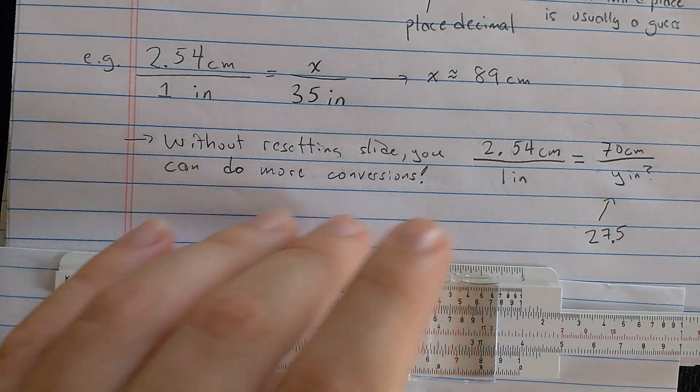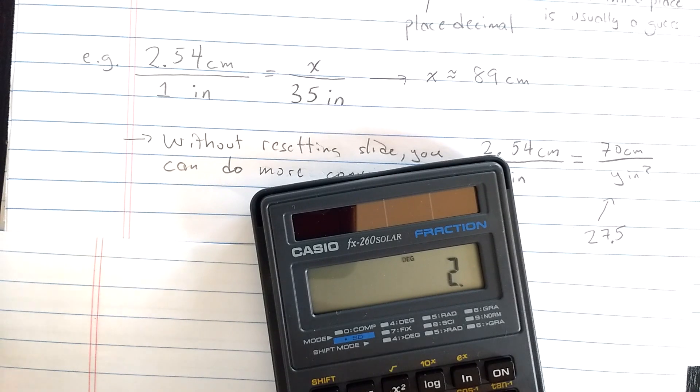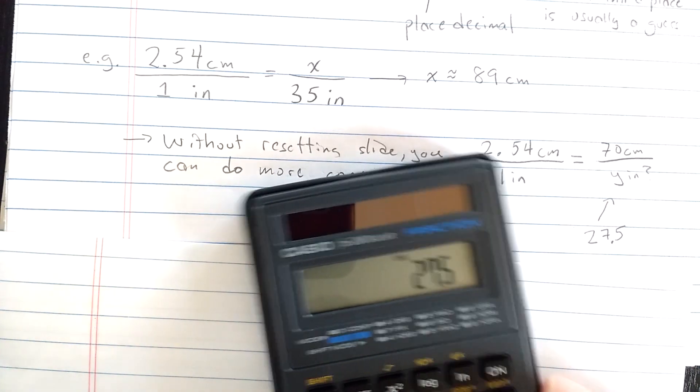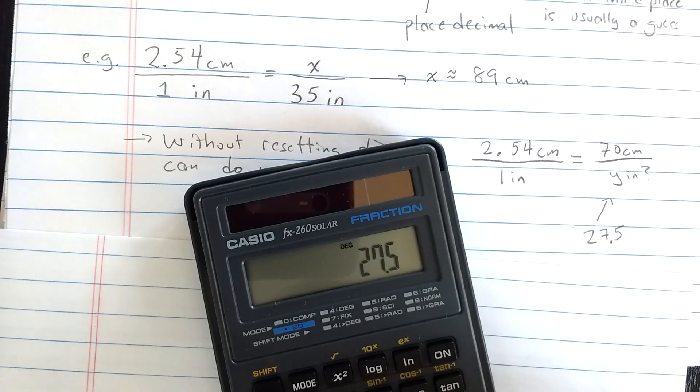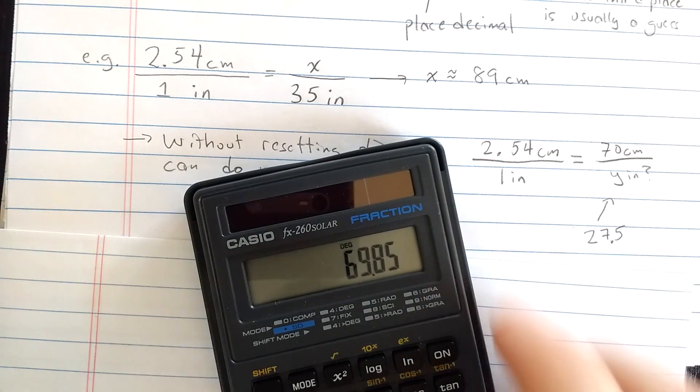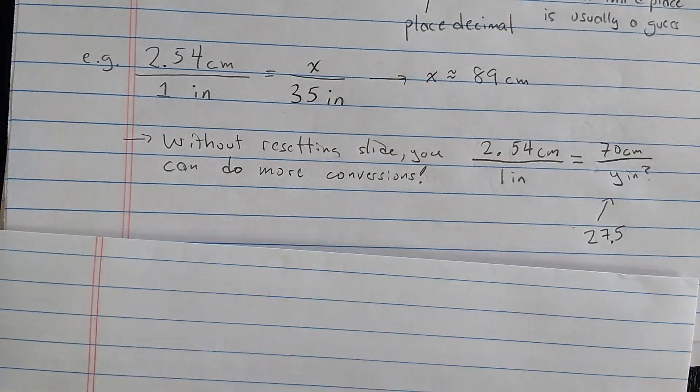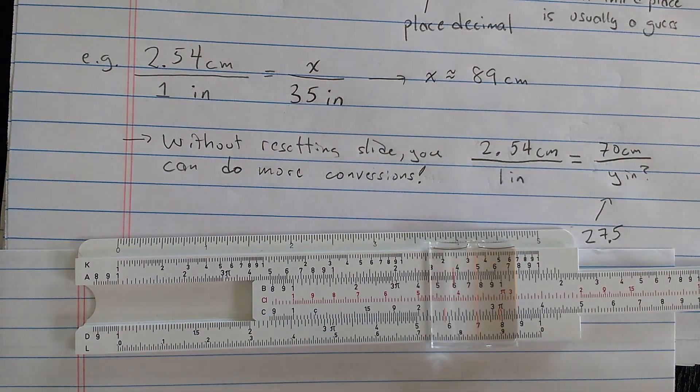Okay, let's check our result on the calculator here. So I have 27.5. Well, what should I do? I should multiply by 2.54. Okay, 69.85. Looks like it's coming out pretty close to correct. Okay, so there's how to do simple conversions.